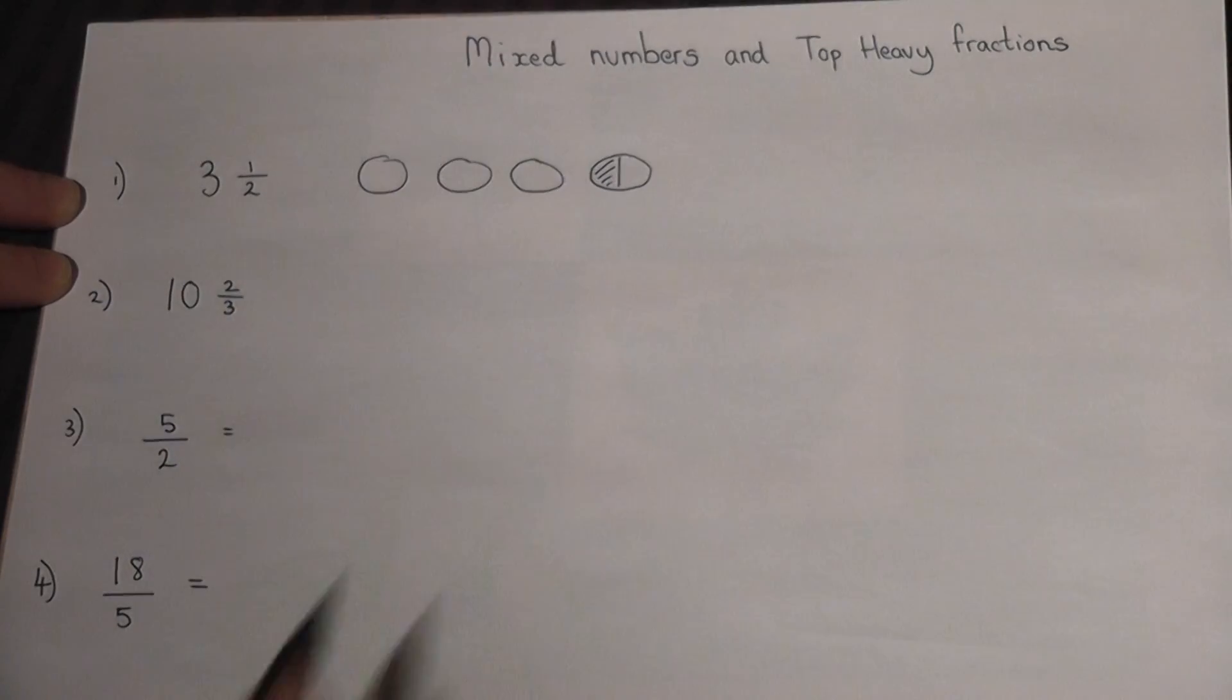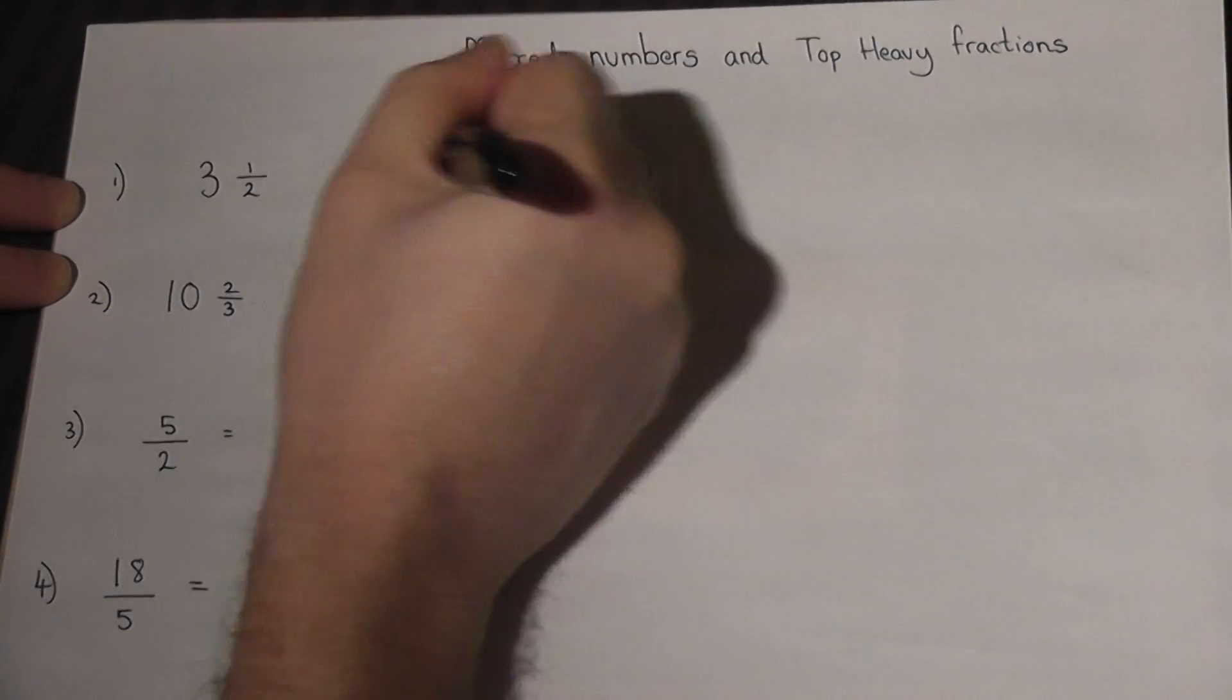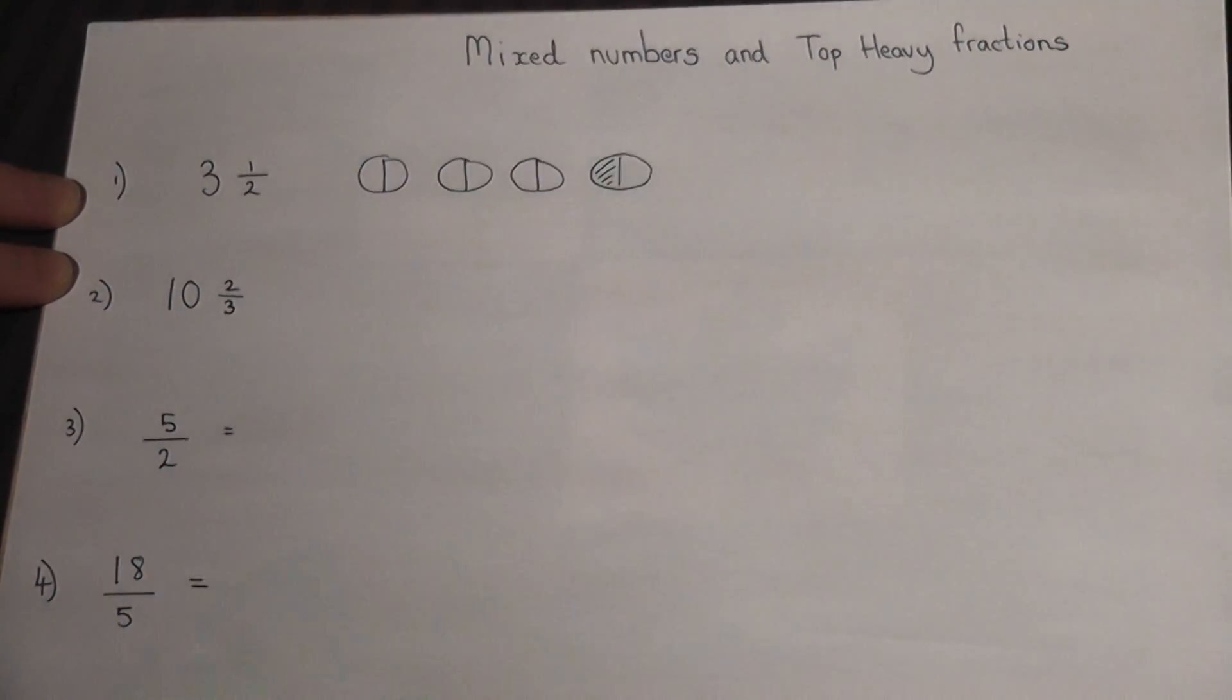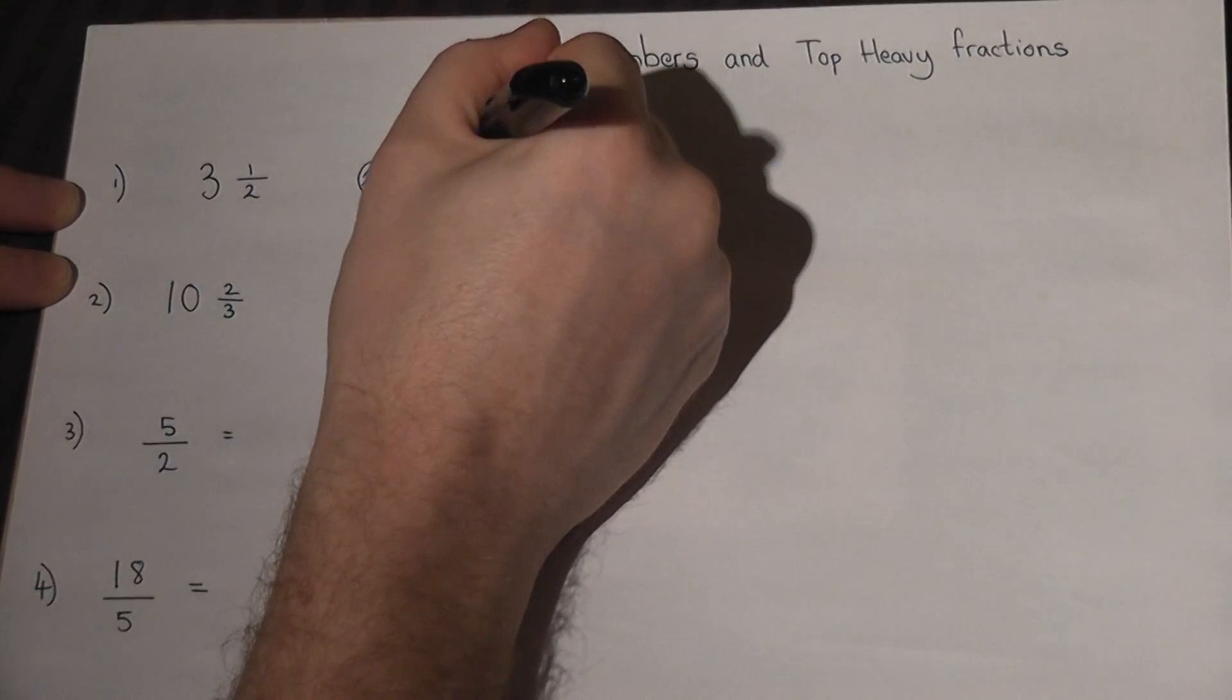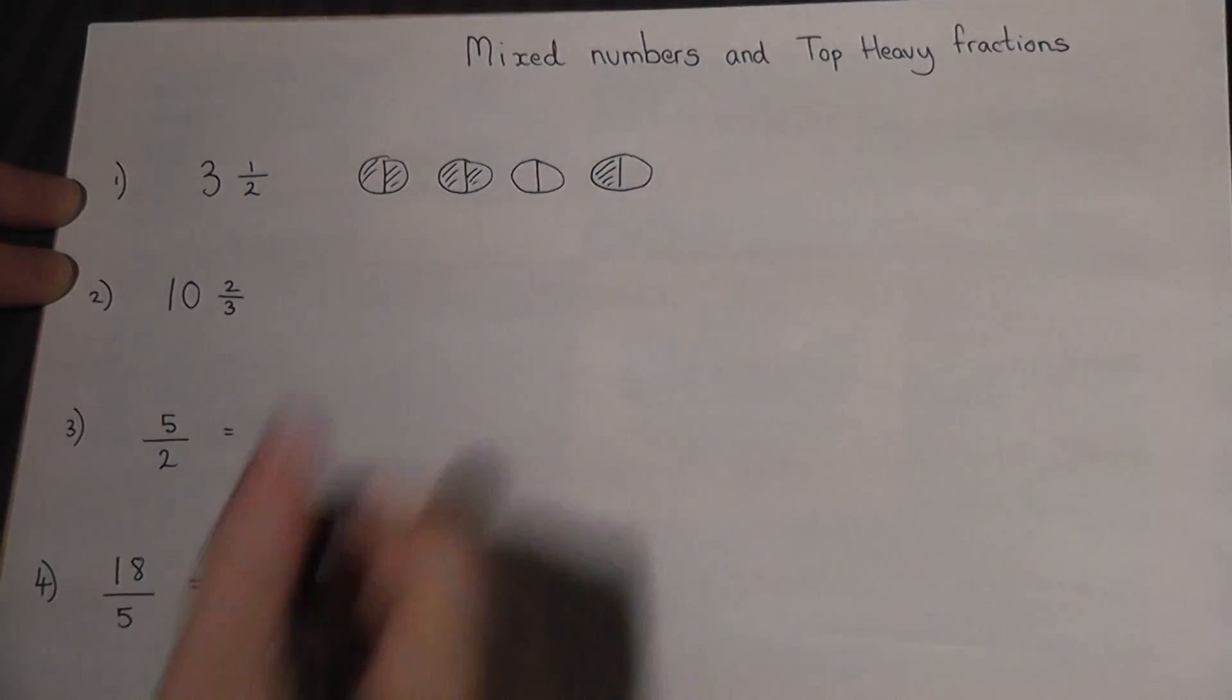Now the three whole ones can be seen in the following way. The first whole one is two halves, then another two halves, then another two halves.